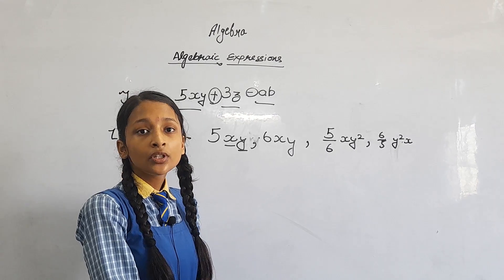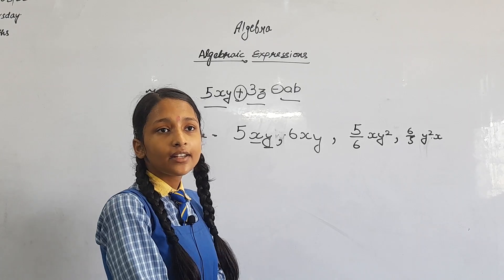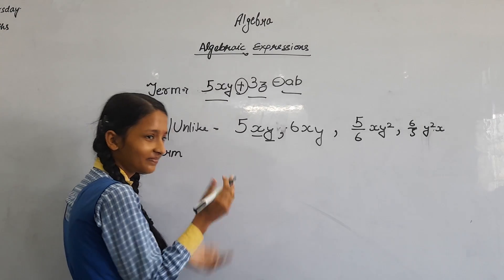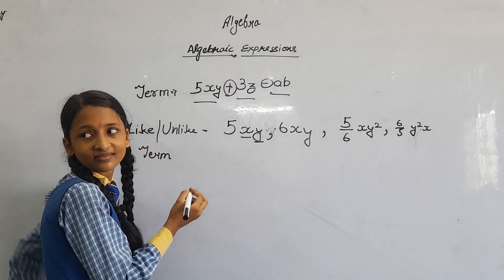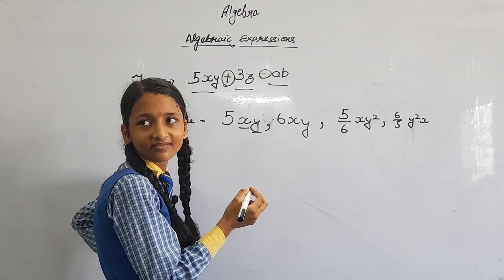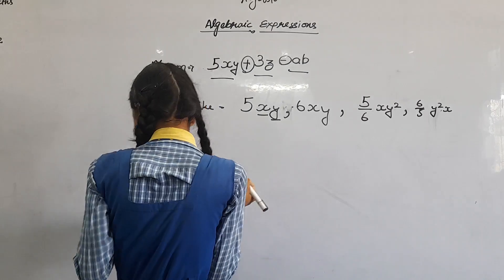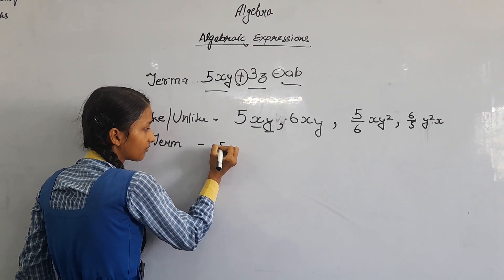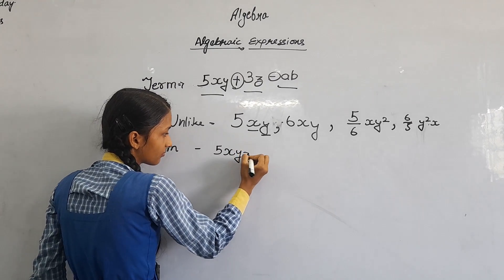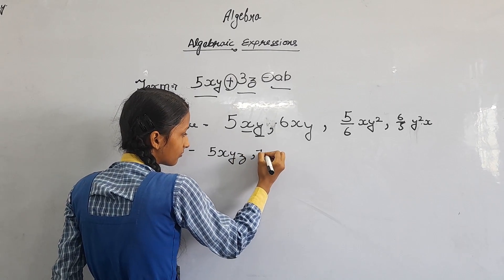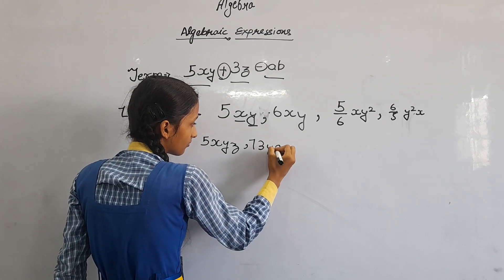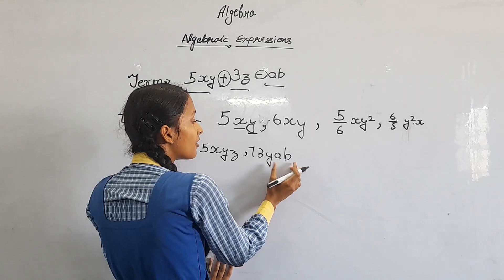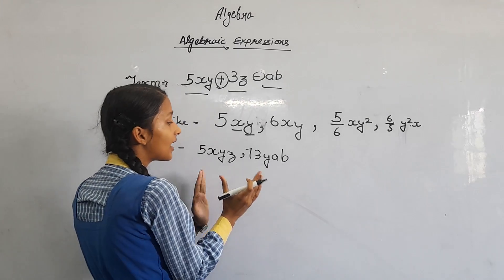Unlike terms are those whose literals are different, and they are known as unlike term. For example, here we see x, y, z in the first, and in the second y, a, b. So it is not a like term — it is an unlike term.